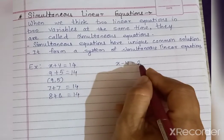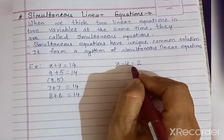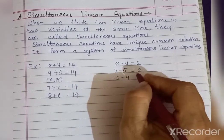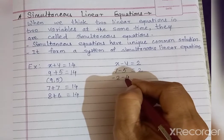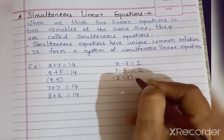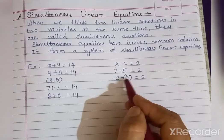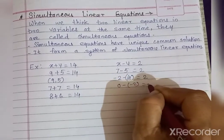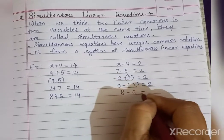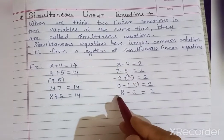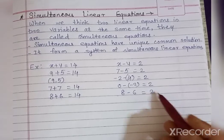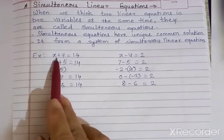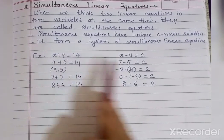Similarly for the second equation x minus y equals 2: we can put 7 minus 5 equals 2, or −2 minus (−4) equals 2, or 8 minus 6 equals 2. These are different solutions for the single equation. So in this way we get different values for a single linear equation in two variables.